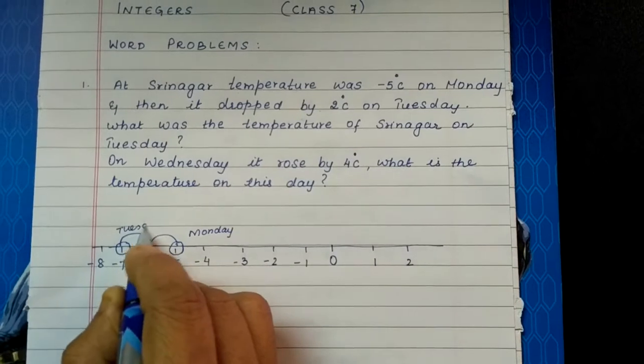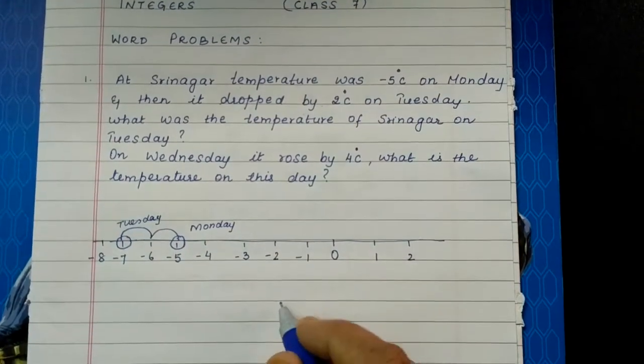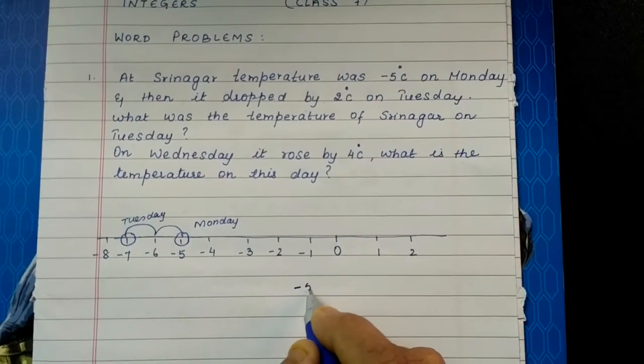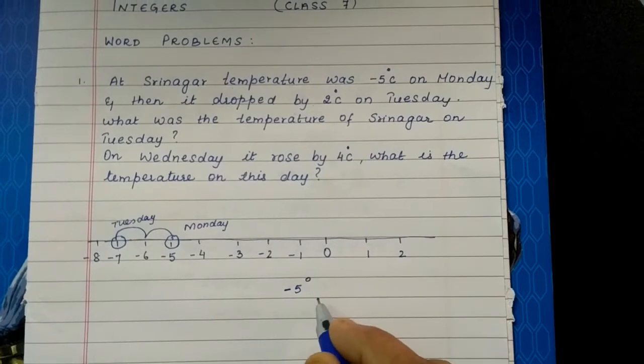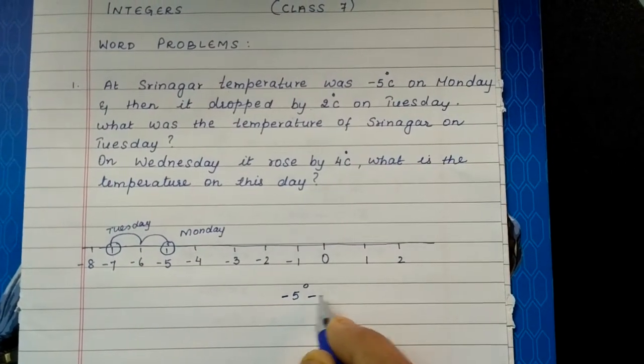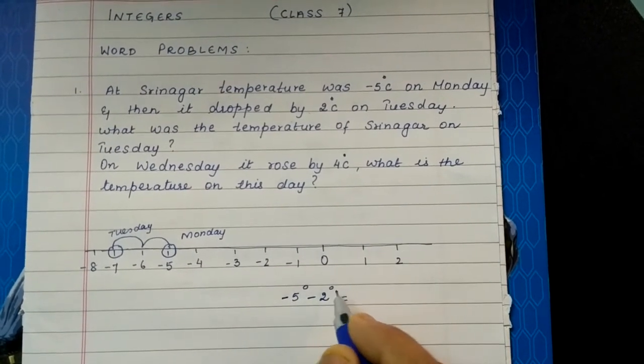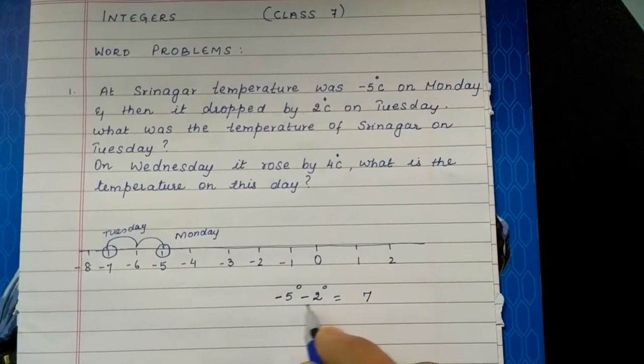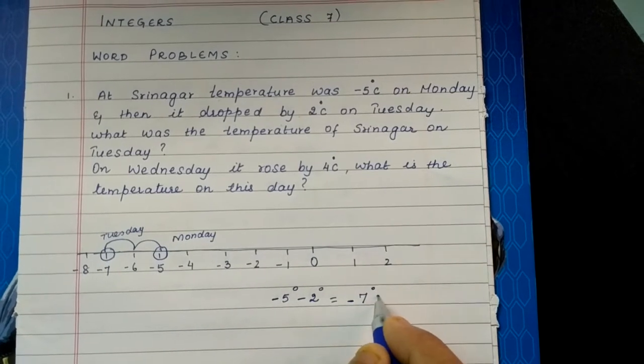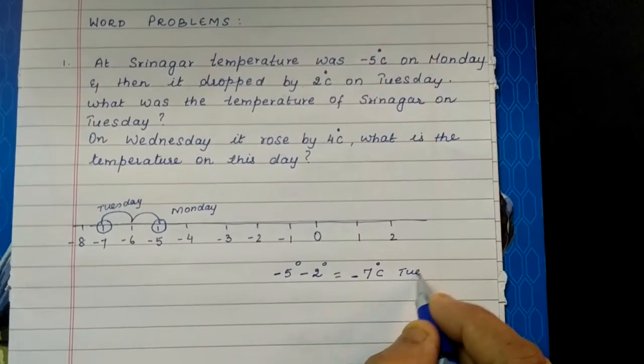We can do this without a number line also. You should write minus 5 degrees, which was on Monday, and because it fell, you have to write minus 2 degrees. So when there are two negatives, what do you do? You add and put the sign of the greater number. So minus 7 degrees Celsius on Tuesday.